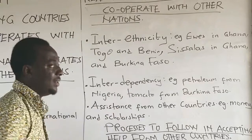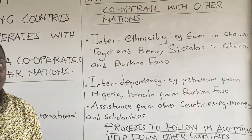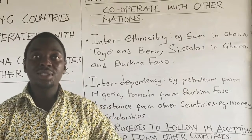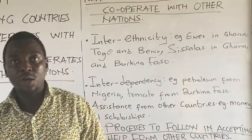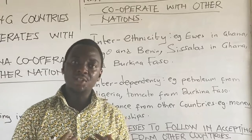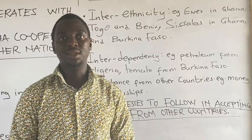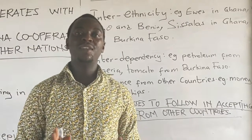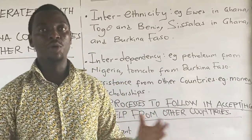The second reason is interdependency. Ghana cannot provide everything on its own. We import things from other neighboring countries, like petroleum from Nigeria and tomatoes from Burkina Faso. We also supply other countries with materials through exportation. So we need to cooperate with them so that in times of difficulty, we can get other commodities from them — whether finished goods or raw materials.